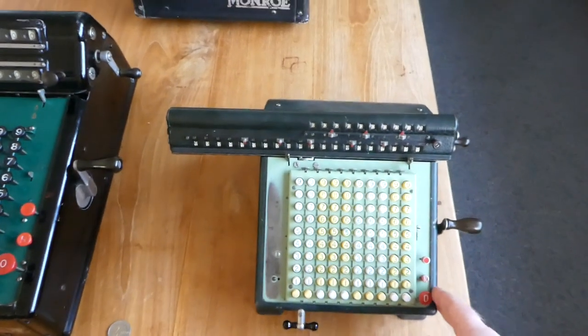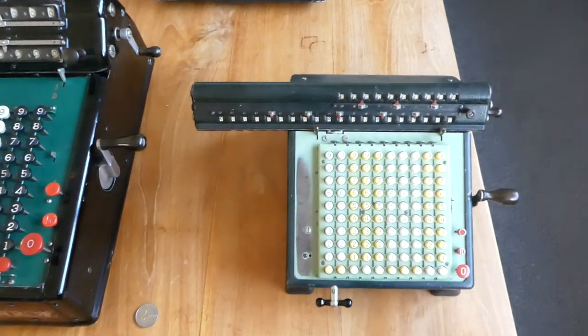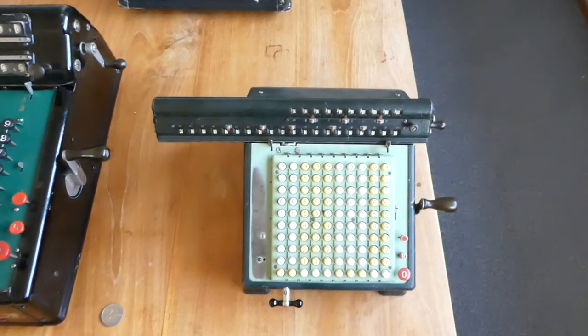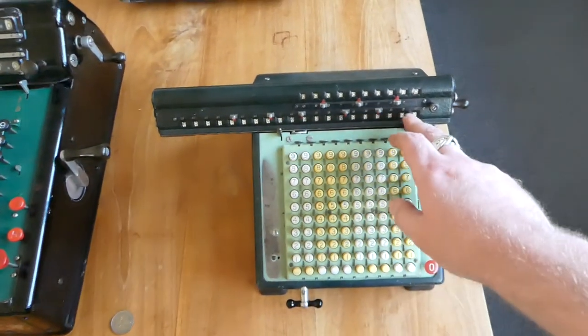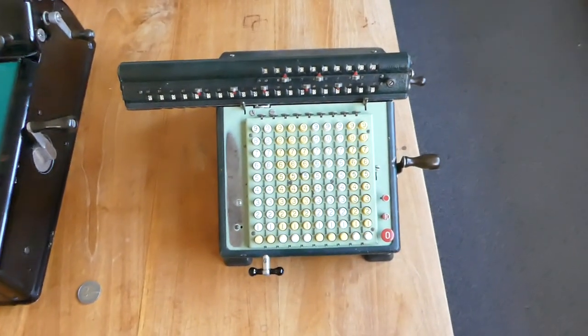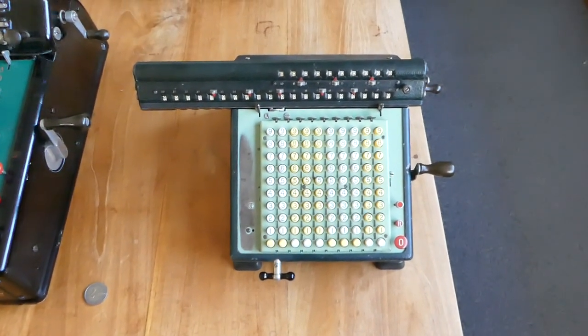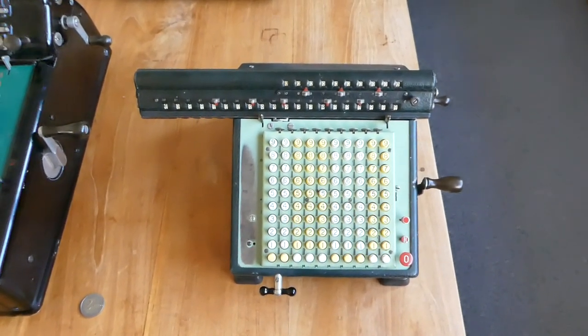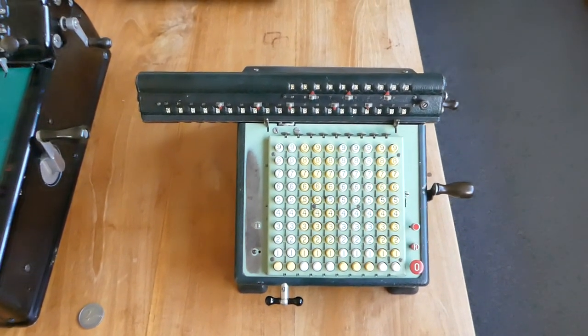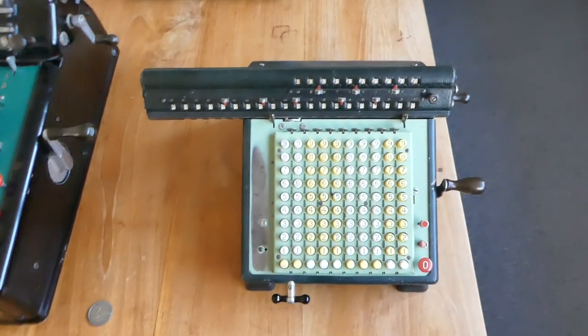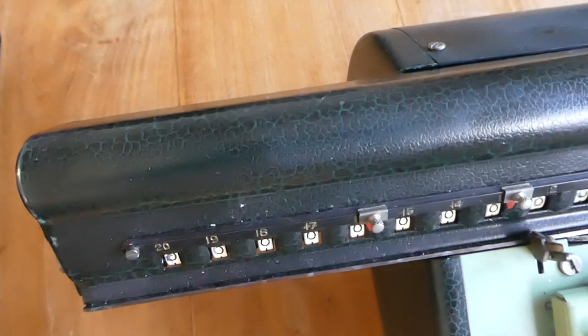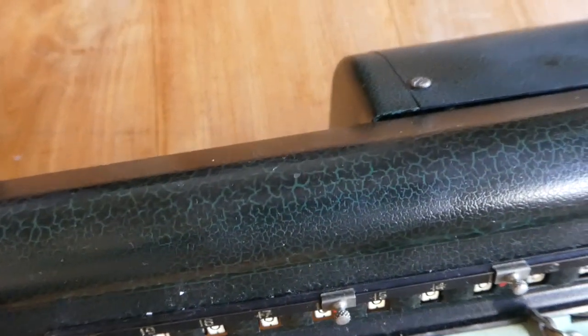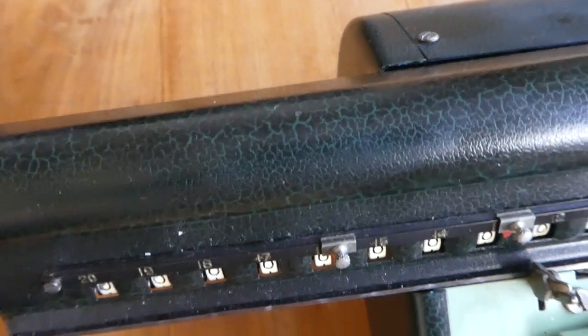The model L, this one is the model L200X. So 20 means it has 20 digits in the register and the X means executive. I'm not really sure what that means, what that entails, being an executive model. Maybe it's the nice painted finish, which is sort of black with crinkle paint with a green undercoat. It's quite beautiful.